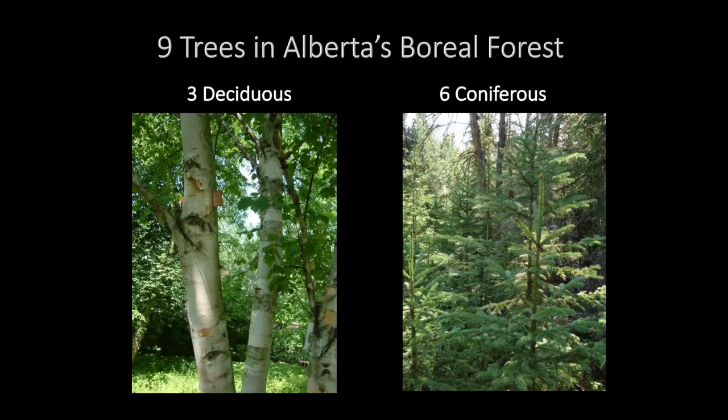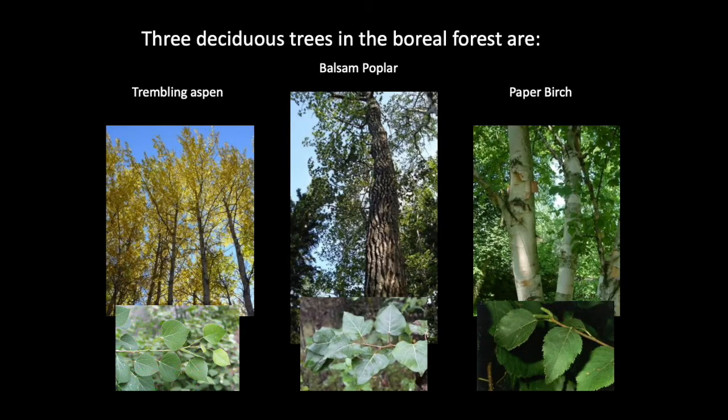In Alberta's boreal forest, there are nine different kinds of trees that grow — three deciduous and six coniferous. The three deciduous trees are Trembling Aspen, Balsam Poplar, and Paper Birch.